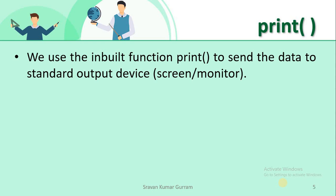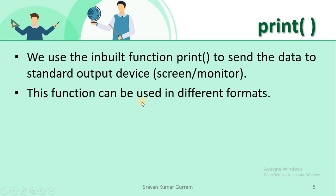We use the built-in function print to send data to the standard output device. Generally, the standard output device is a screen or monitor. In simple words, the print built-in function is used to display some data on the monitor. Sometimes if you want to store the data in another file, we can do that with the help of the print function. We can use print function in different formats.